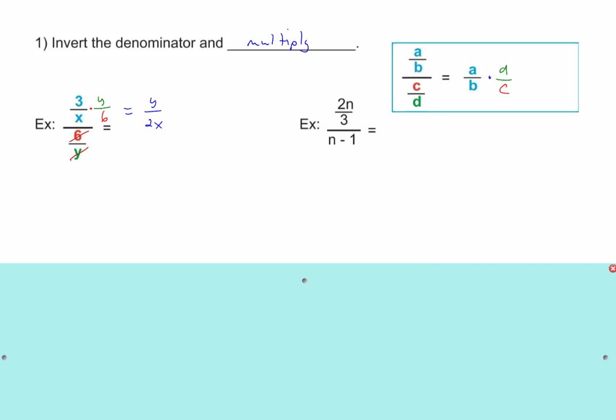So on the second one, what would your multiplication step look like? Go ahead and do this. You just want to make sure that you're thinking right. Fractions — you're always thinking top and bottom. The only trick to this is to say that's an N minus 1 over 1, so when I flip it, it ends up like that. And from here on out, we're going to look to reduce before we multiply.